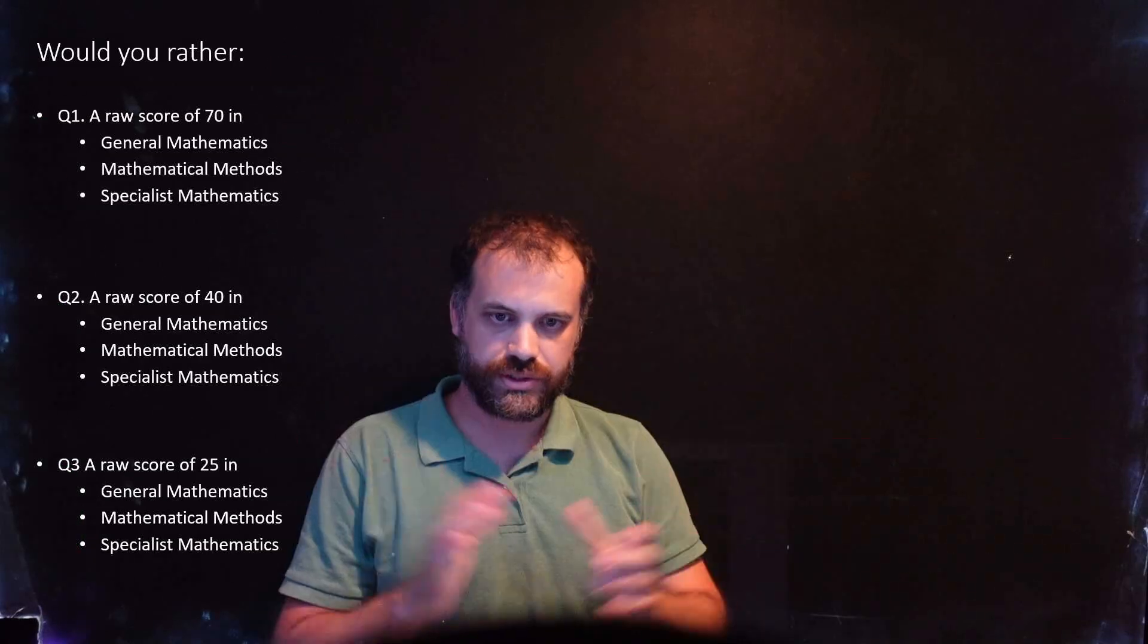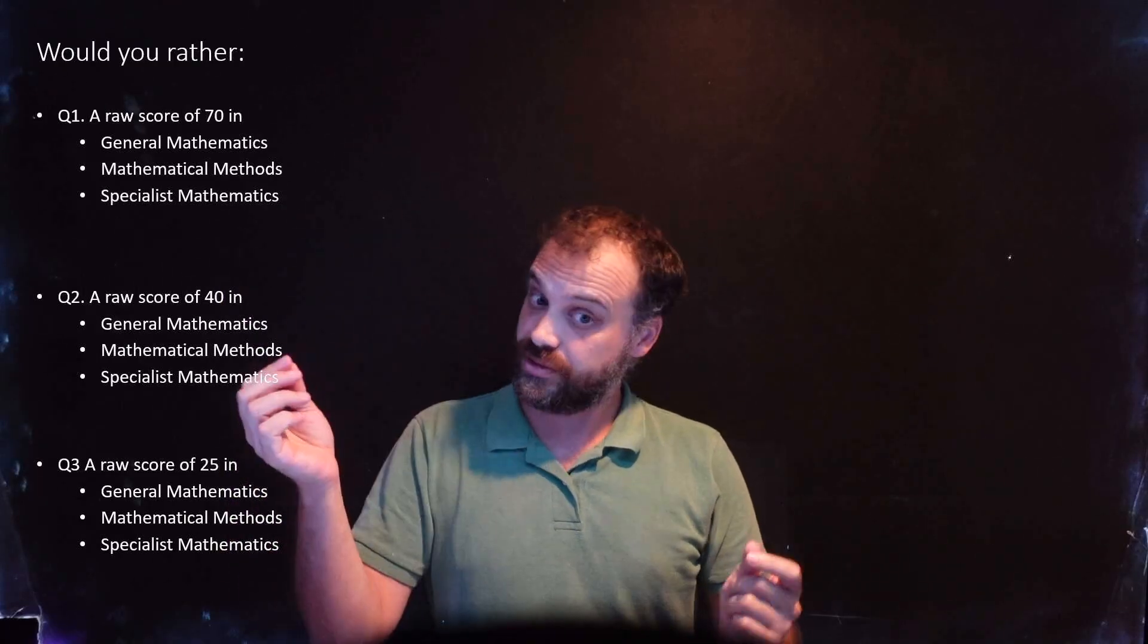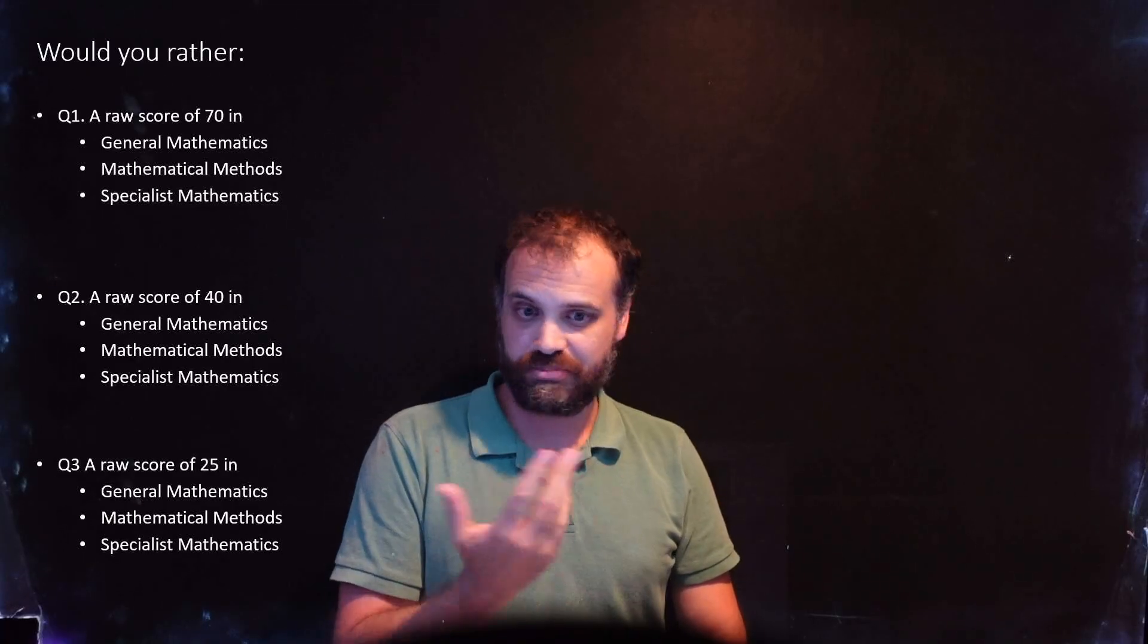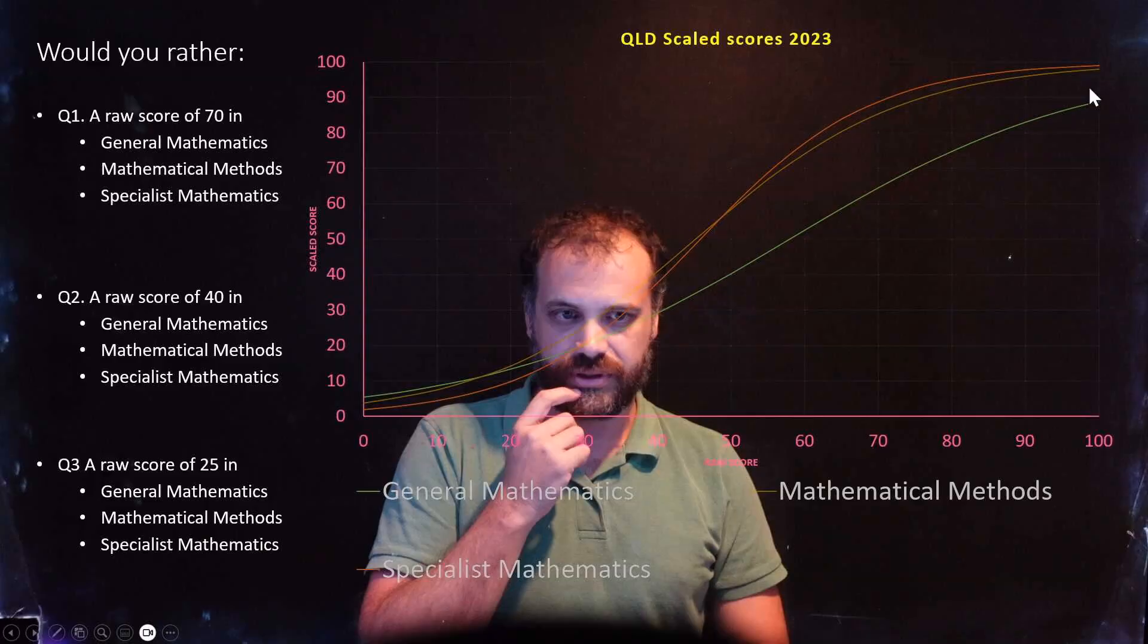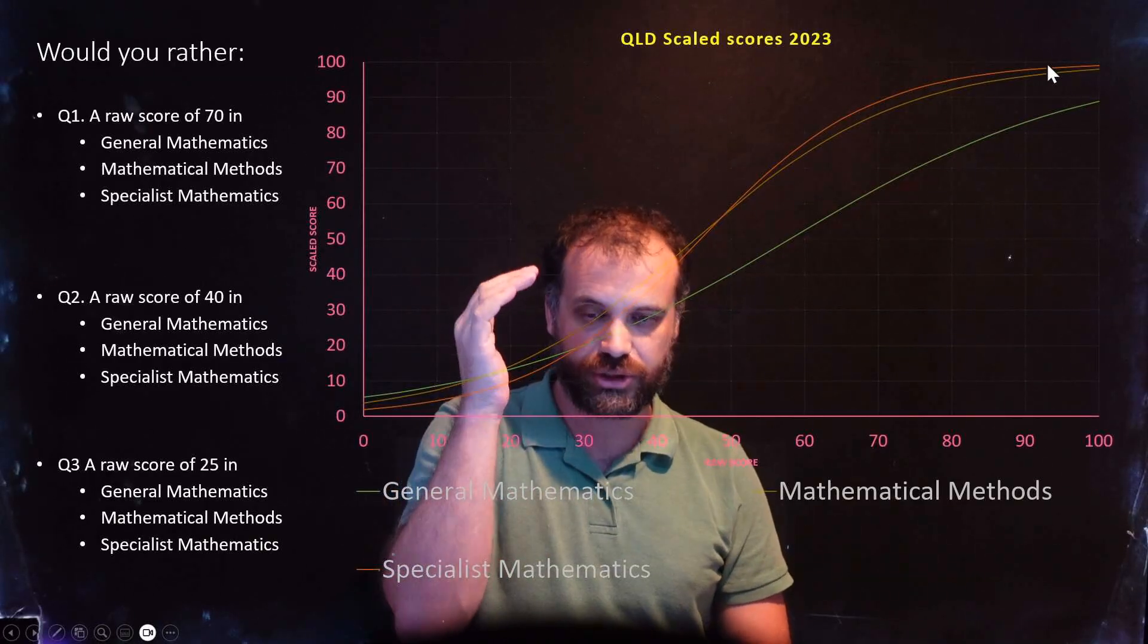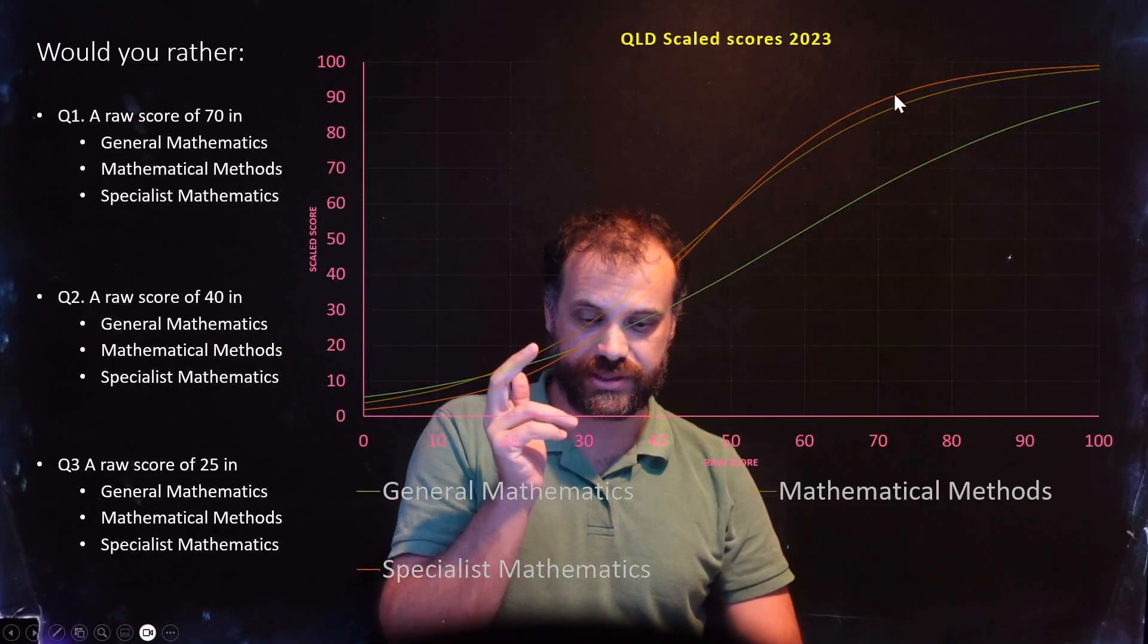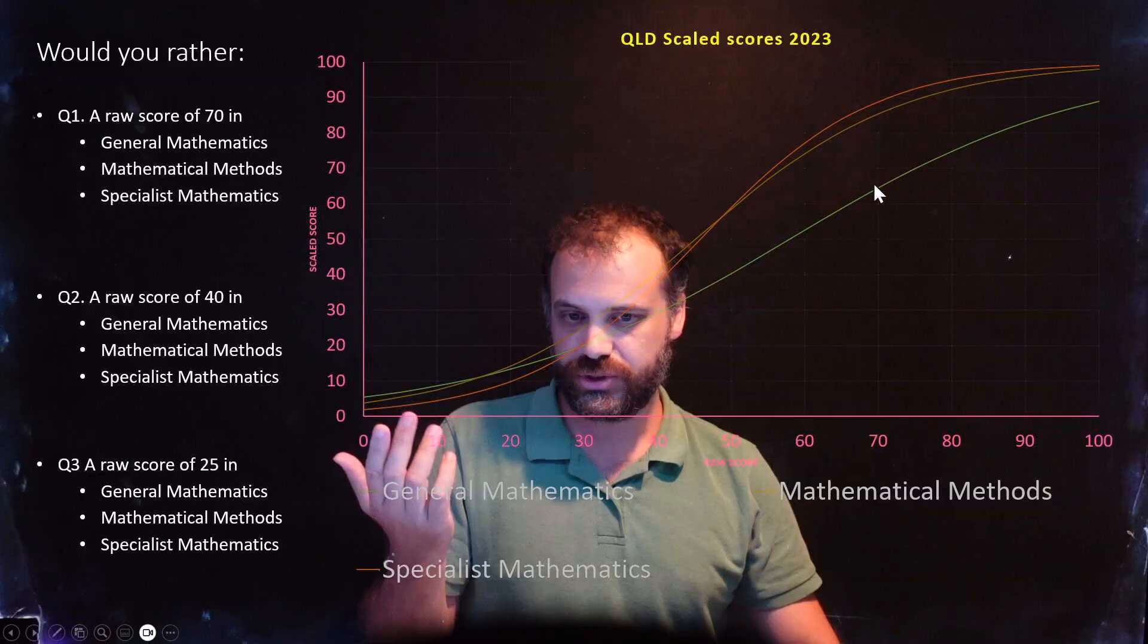One more. As a maths teacher, I couldn't go past this. A raw score of 70 in the maths, 40 in the maths, and 25 in the maths. This is amazing. Here we have, no surprise, specialist up out in front when we've got a 70. Here we are at 70. Specialist, methods, and then general. No surprise.